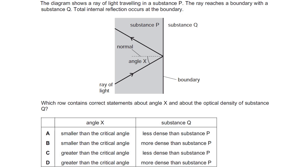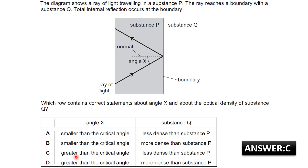Question 4: The diagram shows a ray of light traveling in substance P. The ray reaches a boundary with substance Q, and total internal reflection occurs at the boundary. Which row contains correct statements about angle X and the optical density of substance Q? Since total internal reflection takes place, angle X is greater than the critical angle. Also, total internal reflection occurs in the high dense medium, so substance Q is less optically dense than substance P. The answer is C.